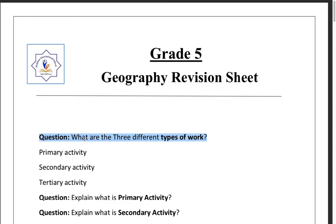The first question here is: what are the three different types of work? Most of the time we think about our parents' jobs — what do they do, how do they earn money. Your parents have different jobs from your classmates' or cousins' parents. Work is not always the same type. We have three main different types of work: primary work, secondary work, and tertiary work.